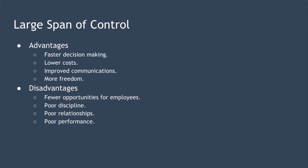In terms of disadvantages, there are fewer opportunities for employees — with fewer layers in the organization, there are fewer chances for promotion. Next, we have poor discipline: with so much autonomy given to employees, these organizations can suffer from poor discipline. Next, we have poor relationships — because there are so many employees to manage, it may be difficult for the manager to form a strong and close relationship with each of their subordinates. And finally, poor performance: with so little supervision, the overall performance of the organization may be poor.